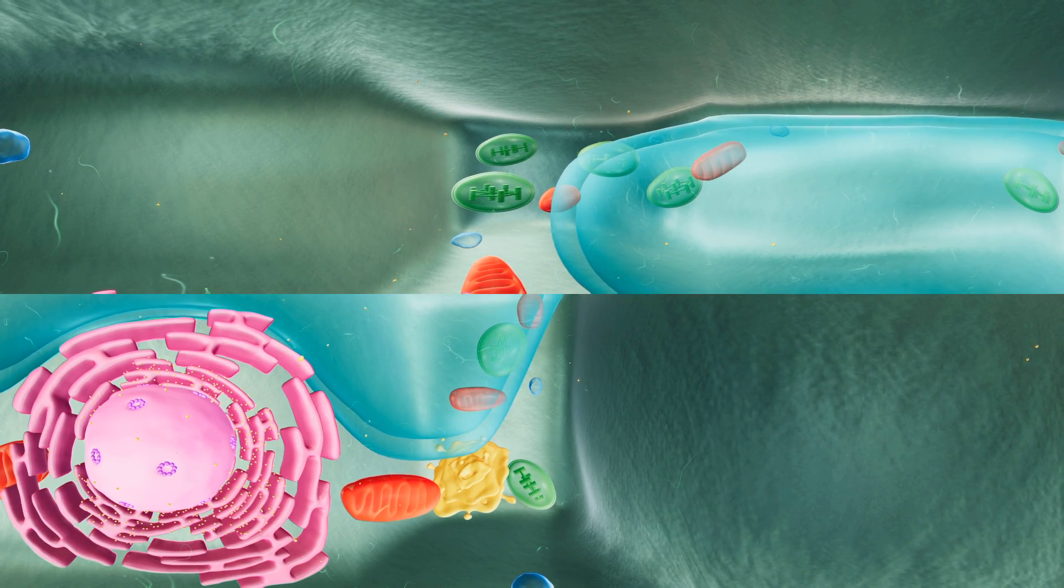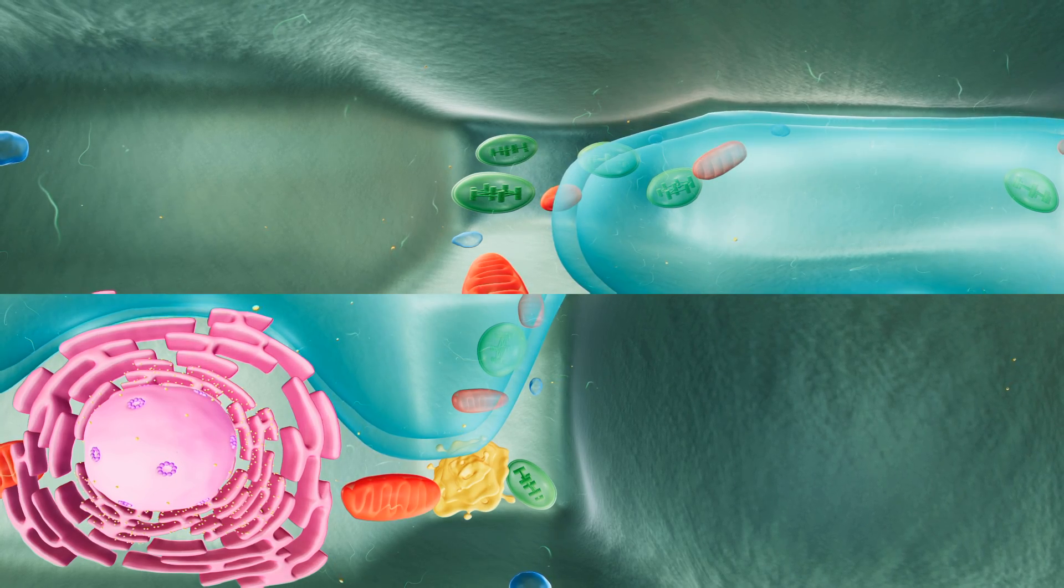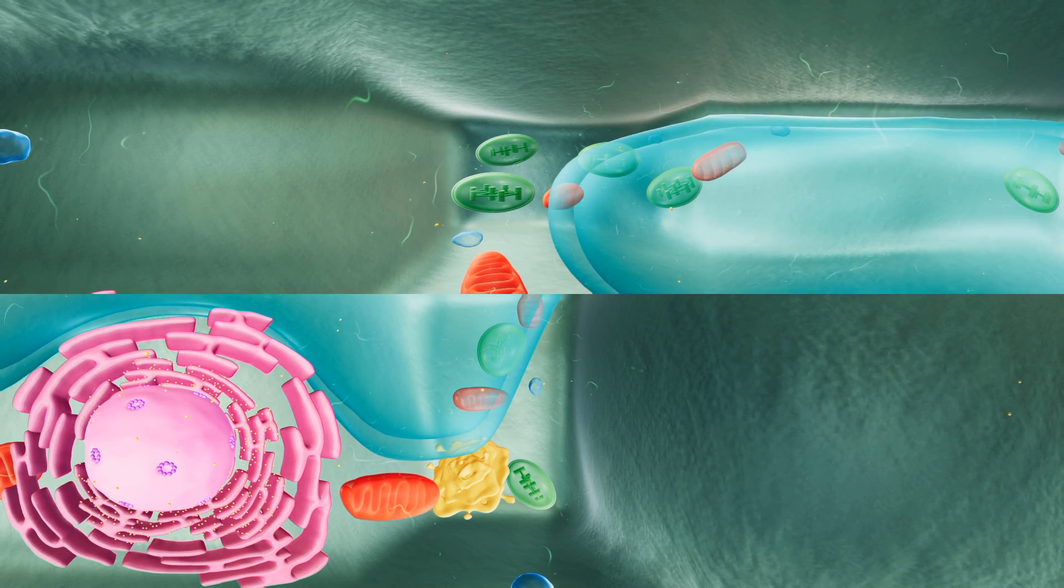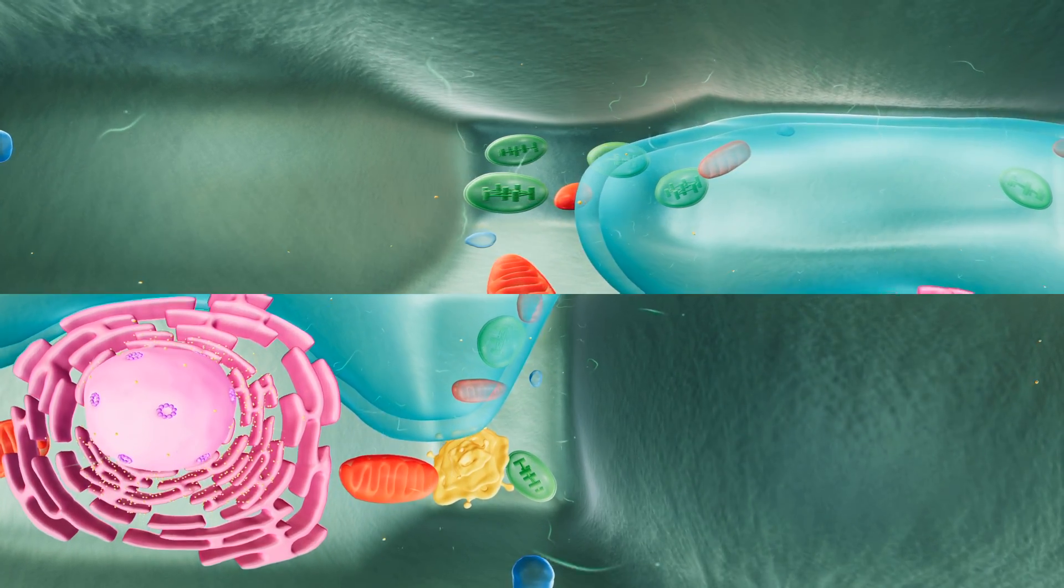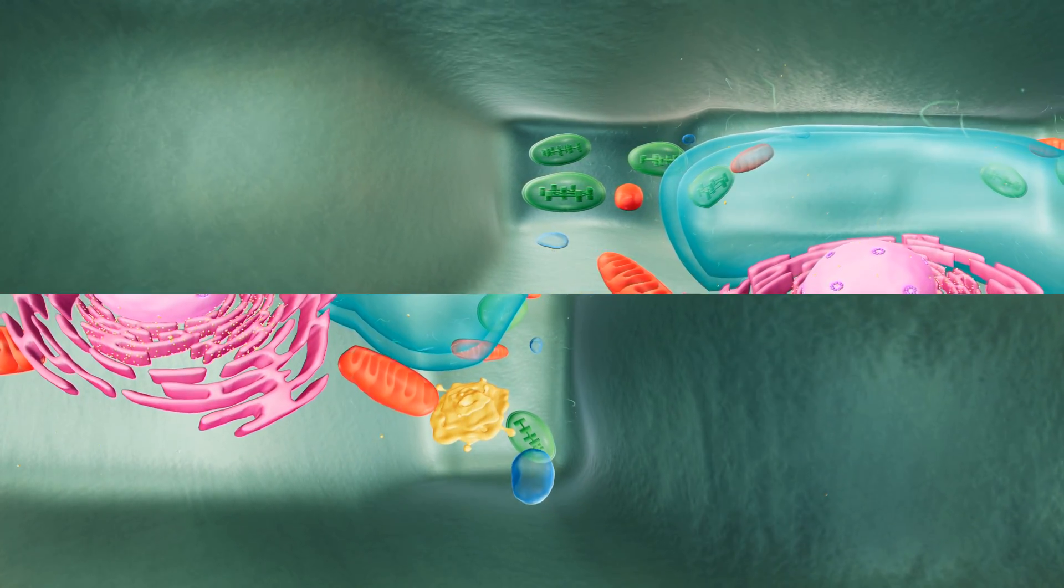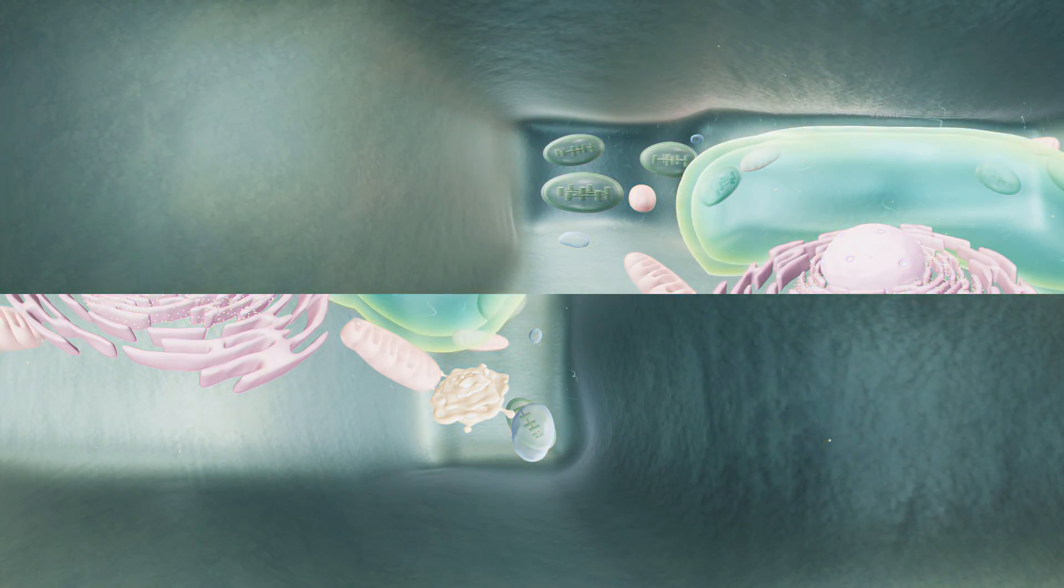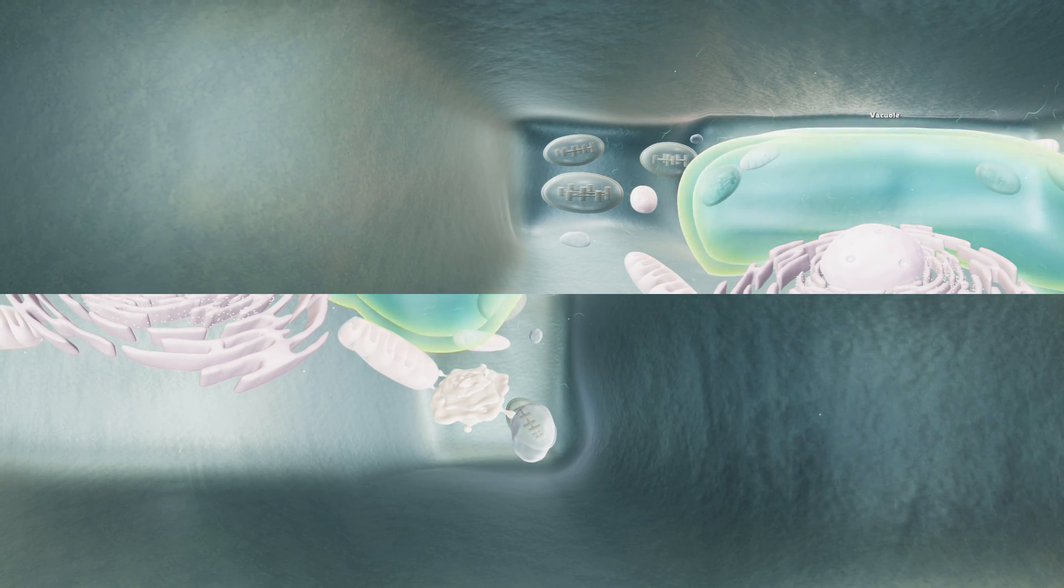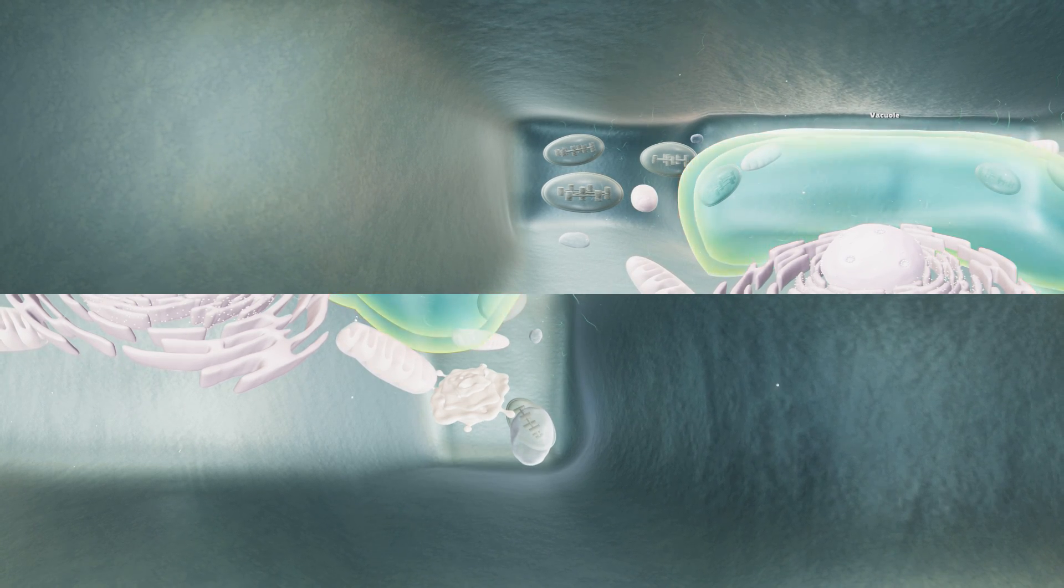Let's look at the things that make a eukaryotic plant cell different from a eukaryotic animal cell. The most notable difference is this large vacuole in the center of the cell. Eukaryotic animal cells also have a few small vacuoles, but none as big as this.